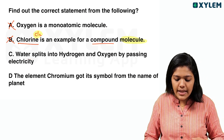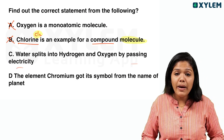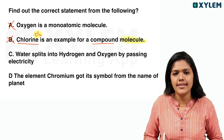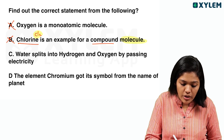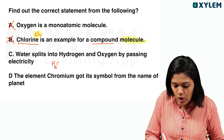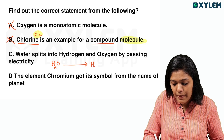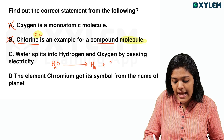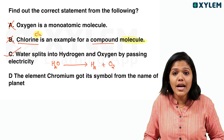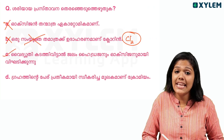Water splits into hydrogen and oxygen by passing electricity. That is correct. We call it H2 and O2 — hydrogen gas and oxygen gas. The answer is option C.